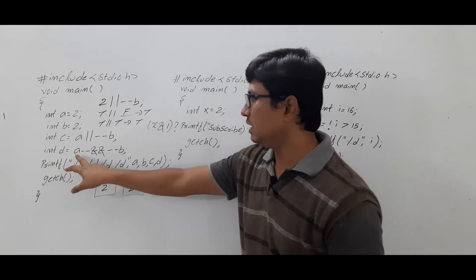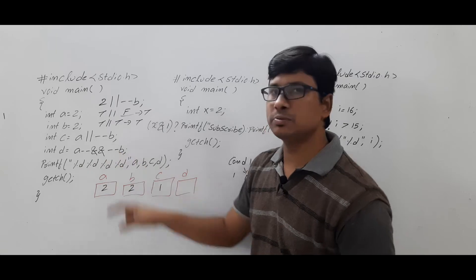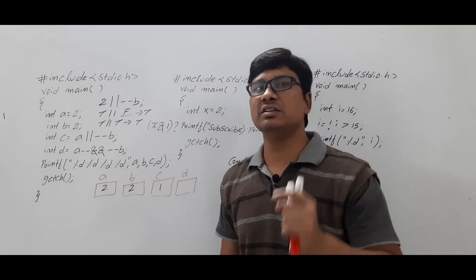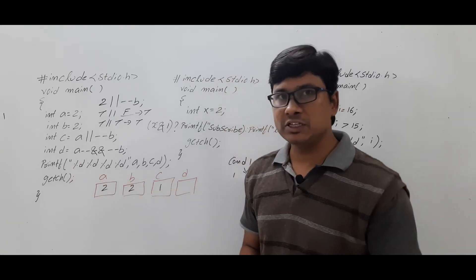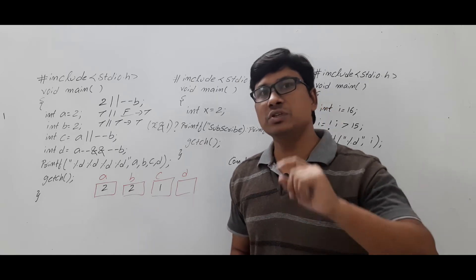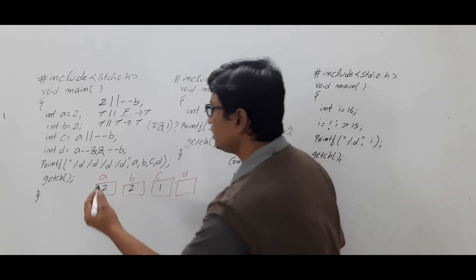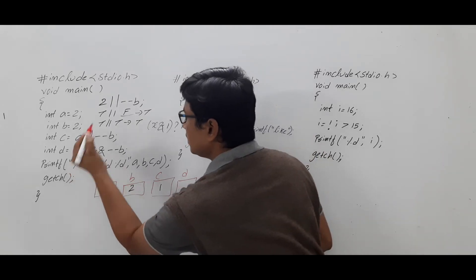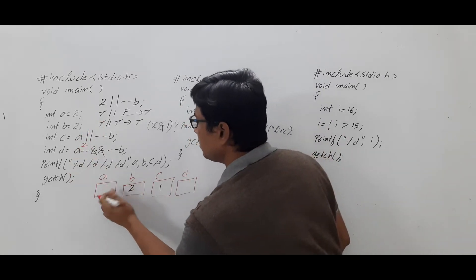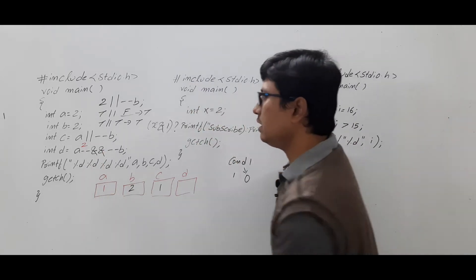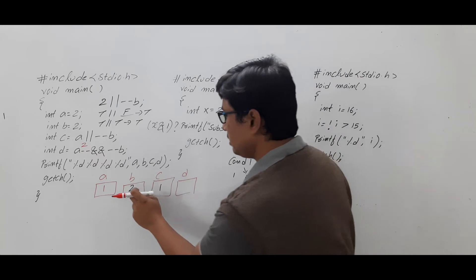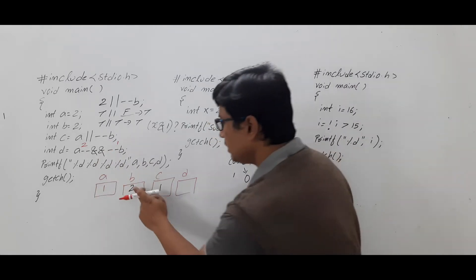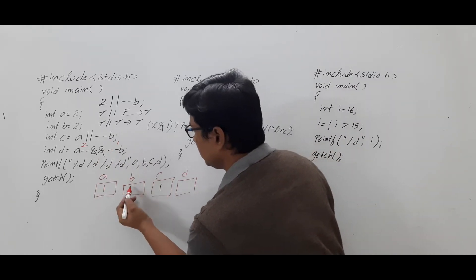Now int d = a-- logical AND (--b). What is logical AND? If both conditions are true then only the final result will be true. Now a-- is post-decrement, so first the value 2 is assigned, then decrement happens, so a is updated to 1. For --b, it is pre-decrement, so first b is decremented, then assigned — b becomes 1.